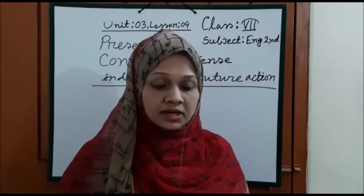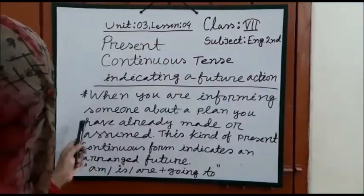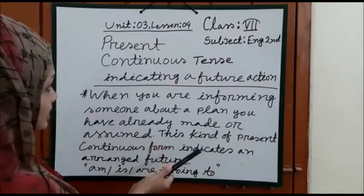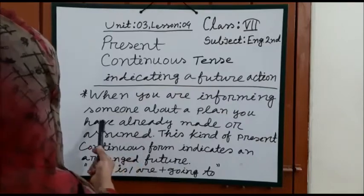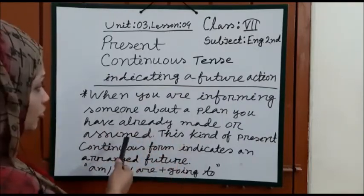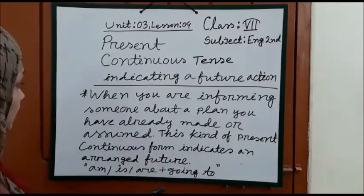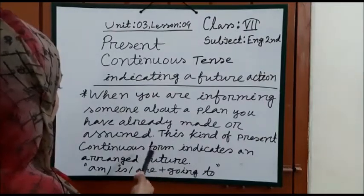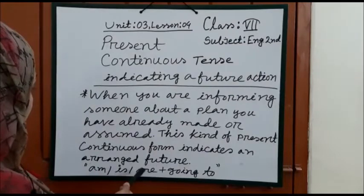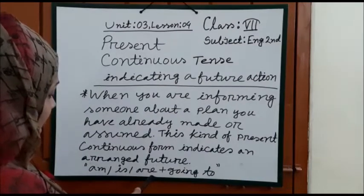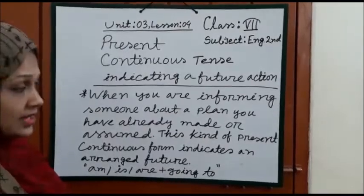Now I am going to show the present continuous tense indicating a future action. When you are informing someone about a plan you have already made or assumed, this kind of present continuous form indicates an arranged future. Am/is/are + going to is used to indicate a future action.